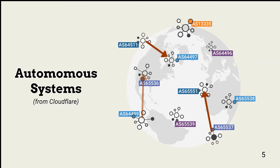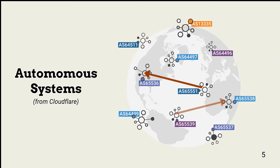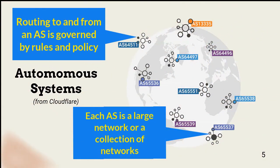Before looking at the next category — gateway protocols — let's define autonomous systems, or ASs. ASs are the largest network division on the Internet. Each AS consists of a large network or collection of networks with a unified routing policy. Every device connected to the Internet is connected to an AS. An AS can be assigned to large networks such as an ISP, a large technology enterprise, a university, or a government agency.